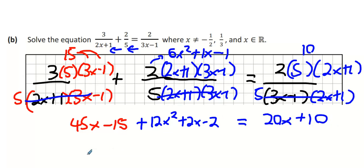I'm going to move everything over one side. And we're going to get 12x squared. We're going to get 45x plus 2x is 47x. 47x, take 20x, is 27x. And then we're going to have minus 15, minus 2 is minus 17. And then bring the 10 over to your side. Minus 17, minus 10, is minus 27.